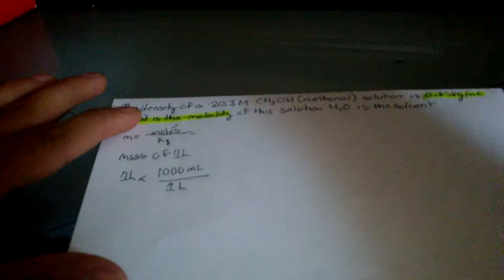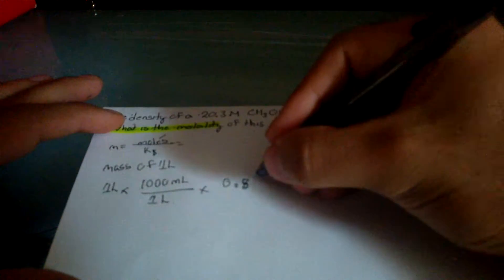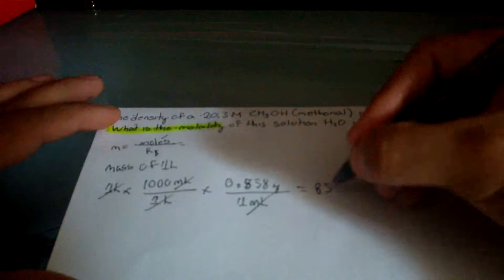So first of all, we want to find the mass of one liter. So basically it's this guy over here. Alright, so we know that one liter equals a thousand milliliters, so I'm going to cancel those guys out. And then times... So that's one liter, milliliters. So that should give you 158 grams.